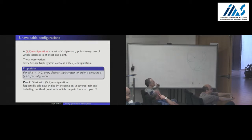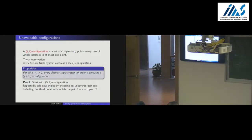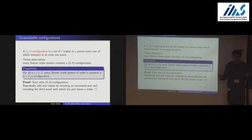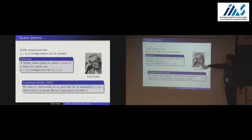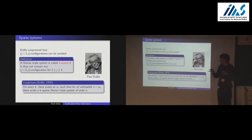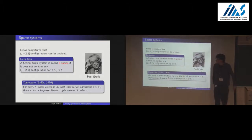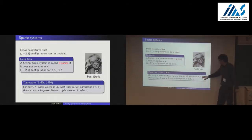So this chain is something we cannot avoid. The natural conjecture is: if we can't avoid J+2,J configurations, can we avoid anything denser? We call a Steiner triple system K-sparse if it doesn't contain any J+2,J configuration for any J up to K. The conjecture is: for any K there exists N_K such that for any admissible N greater than N_K, there is a K-sparse Steiner triple system of that order.